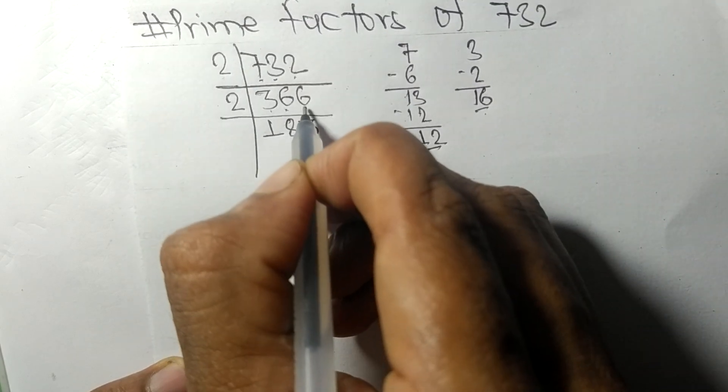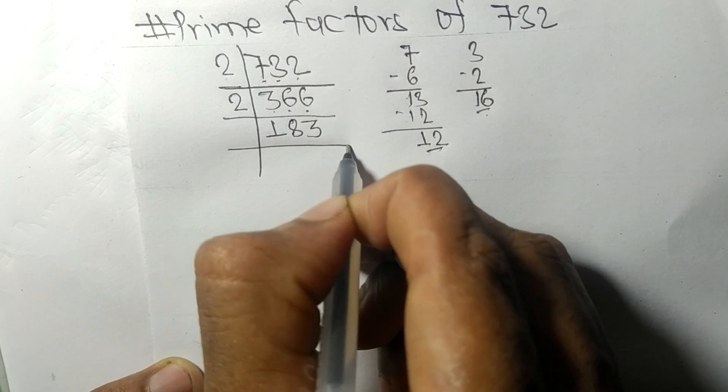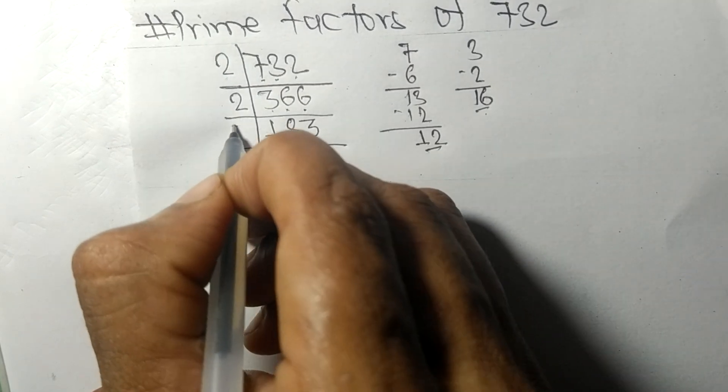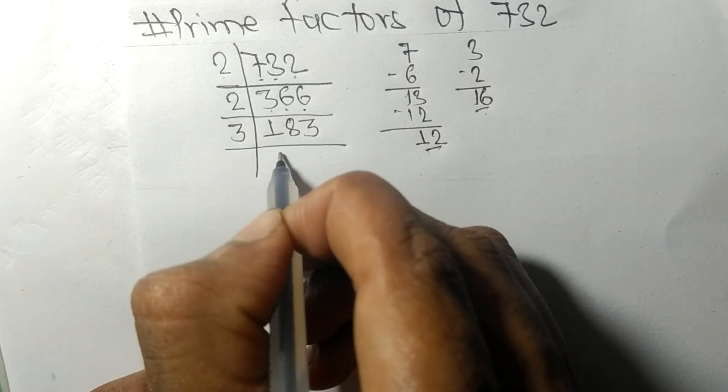So now we got 183, which is exactly divisible by 3. Three times 6 means 18, and three times 1 means 3.